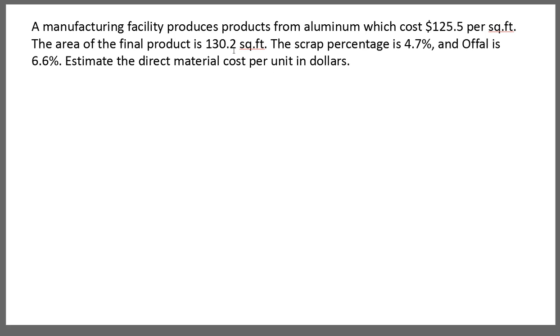Now in this case it is simpler compared to the previous example because the units are consistent. Both of them are given in square feet. So you don't need to convert them between feet and inches. So you can start with estimating the raw material required by accounting for the scrap and the offal. So 1 plus 4.7 which is the scrap percentage and offal is 6.6.